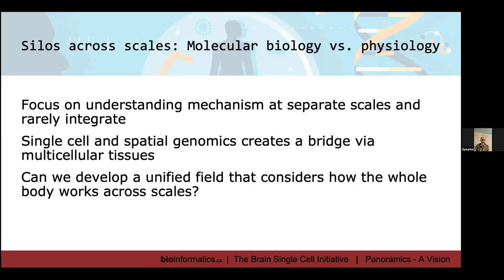Many different fields want to understand how the body works, and traditionally they've been siloed across spatial scales. Molecular and cell biology focuses on molecules up to the cell level, while physiology and medicine has thought about the whole body. Spatial transcriptomics and single-cell genomics, for the first time, provides a lot of information about how tissues work, creating an interesting bridge between these traditionally separate fields. The CIFAR program asks: can we develop a unified field that considers how the whole body works across scales?